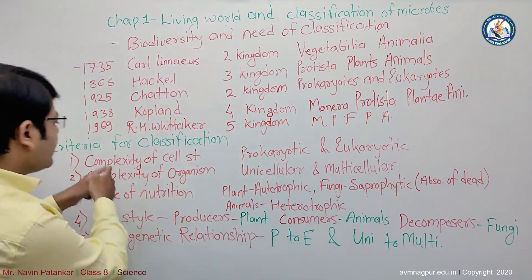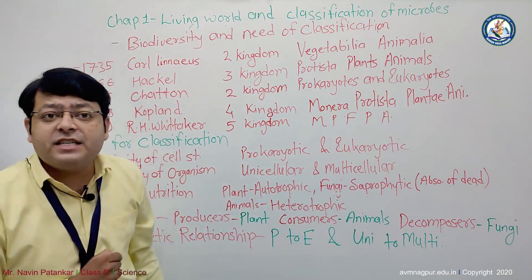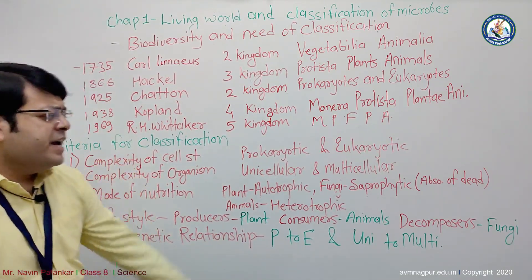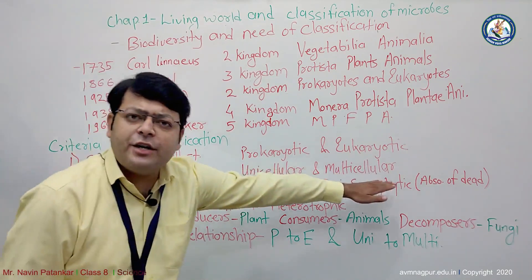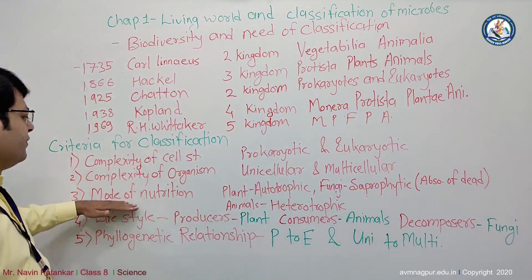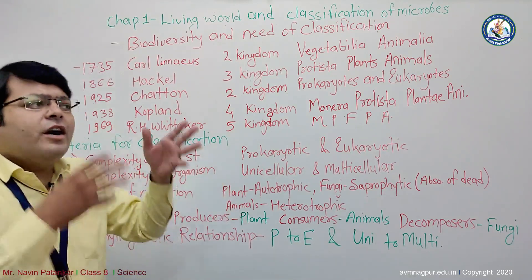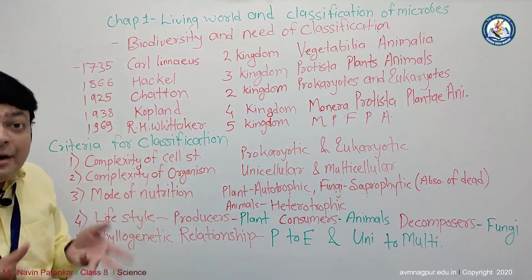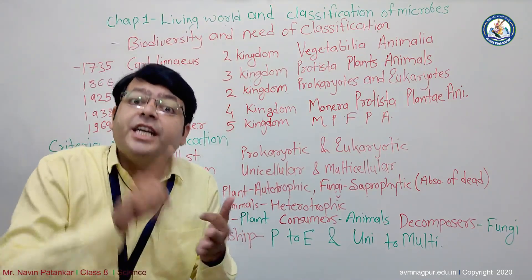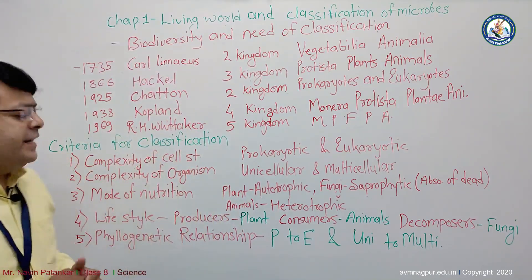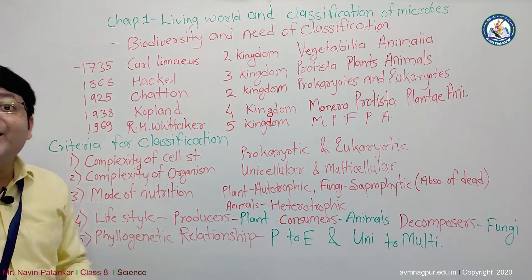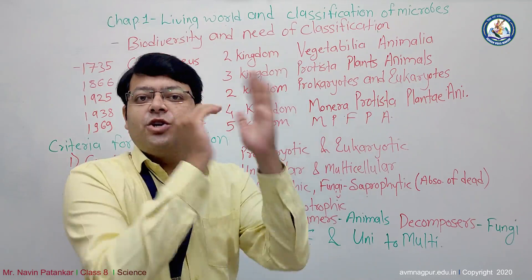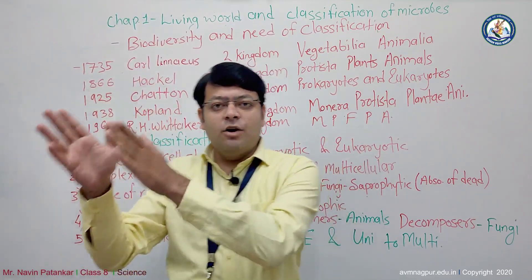To summarize the five criteria for the five-kingdom classification system: First is the complexity of the cell — prokaryotes and eukaryotes. Second is the complexity of the organism — unicellular to multicellular. Third is the mode of nutrition. Fourth is lifestyle — producers, consumers, decomposers. Fifth is the phylogenetic relationship — prokaryote to eukaryote, unicellular to multicellular.